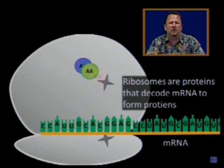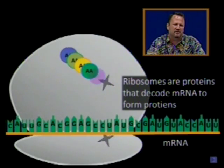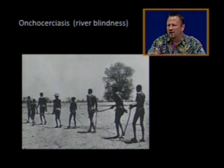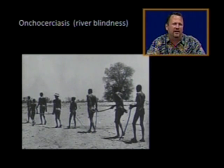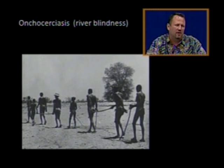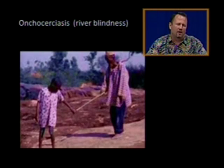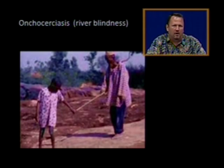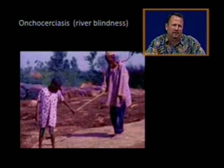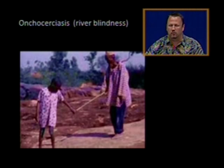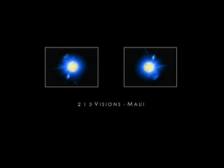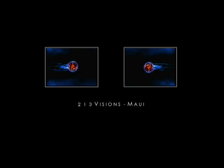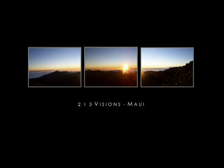Ribosomes are proteins that decode messenger RNA to form other proteins. Here's a picture of the young leading the old with sticks — the older gentlemen are suffering from river blindness, and the young are leading them around. If this young man can help this older gentleman deal with onchocerciasis, river blindness, I'm sure there is something that you will be able to do as well. To be continued... Thank you.